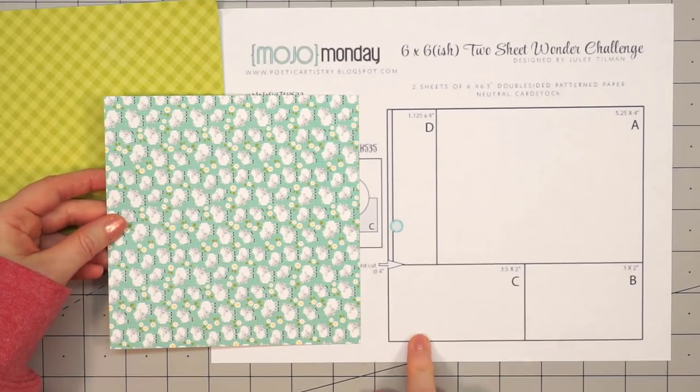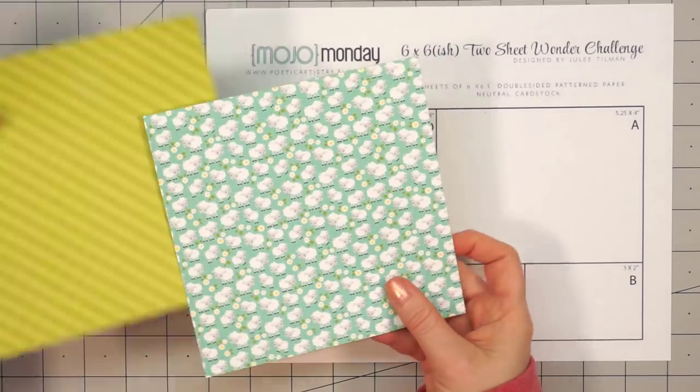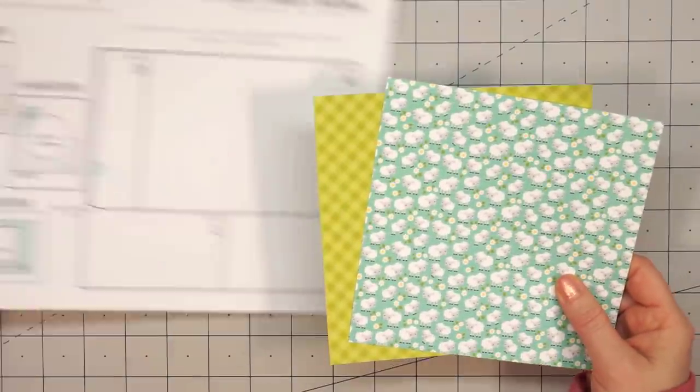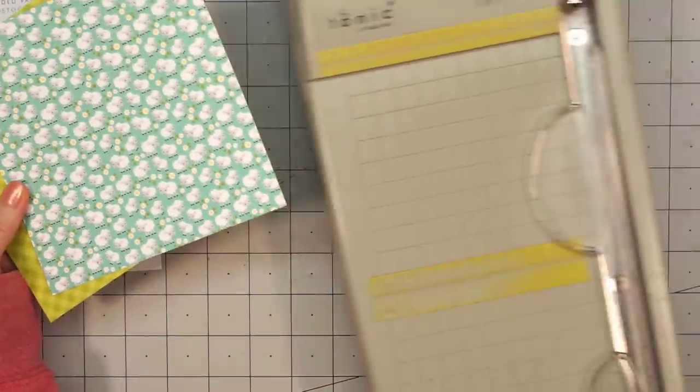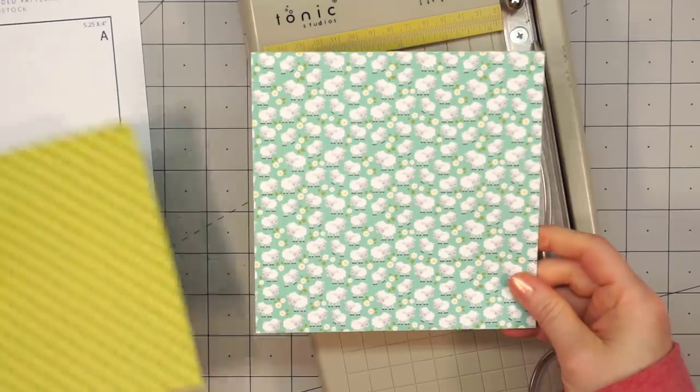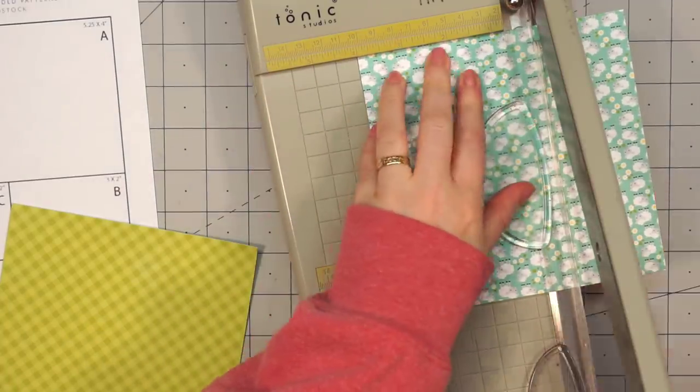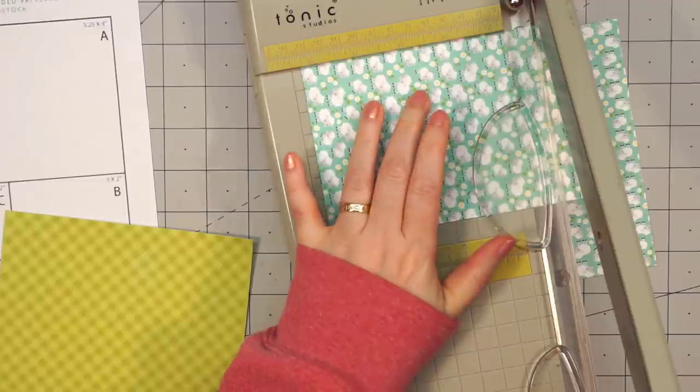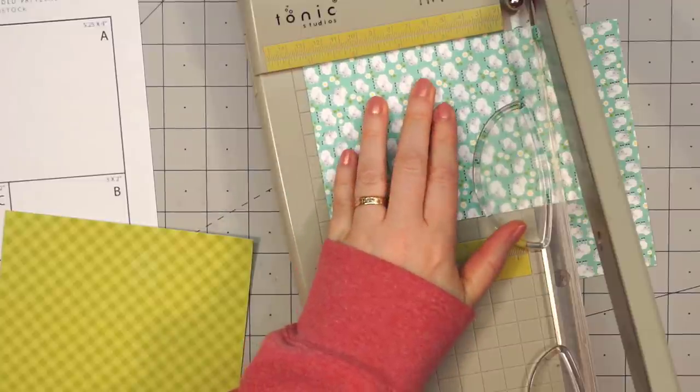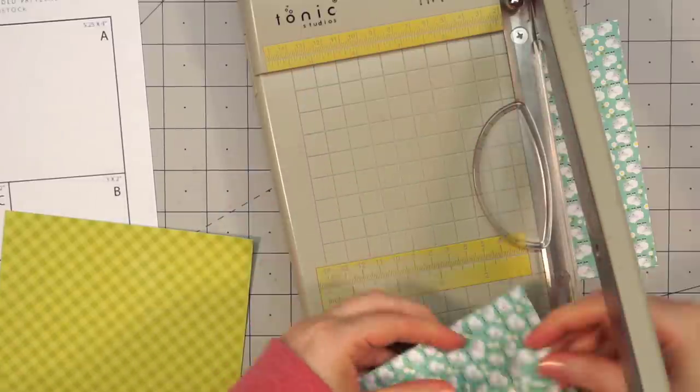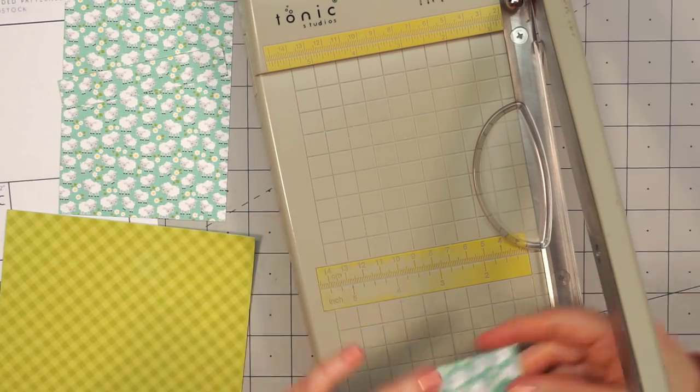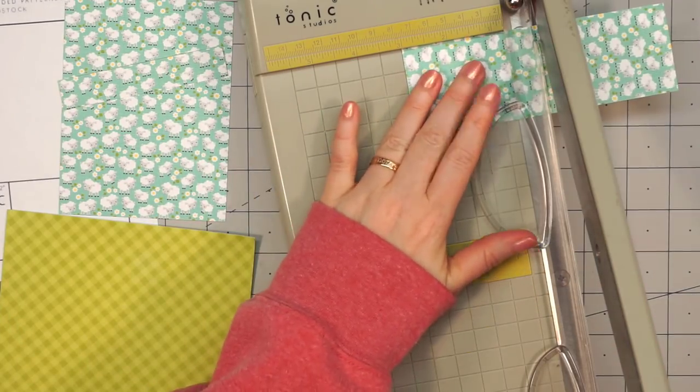If you're using pattern paper that has a direction specific, like the sheep, you don't want to put them sideways on the card. Make sure to cut it the correct direction. On pieces B and C, most of them go vertical versus horizontal. I'm going to cut those pieces with the sheep so they're all upright.